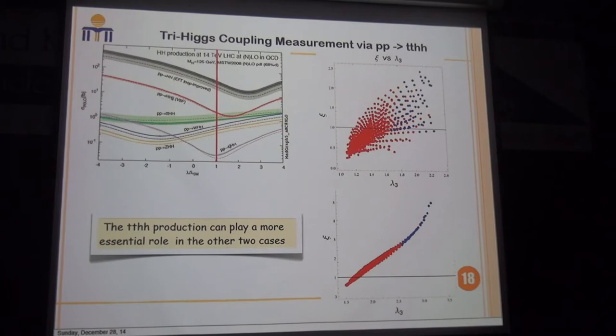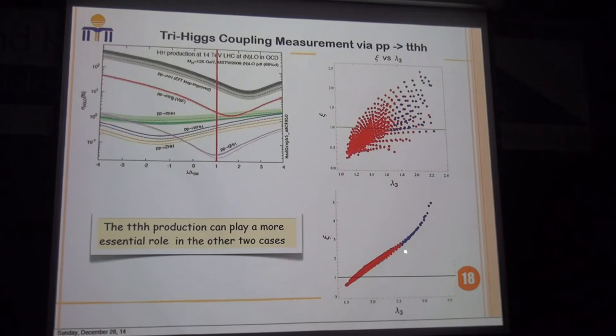As for the other two cases — where the bump for the Higgs potential is generated by an additional charged scalar at the quantum level, or by introducing higher-dimensional operators — in these two cases the distribution of the tri-Higgs coupling is more convergent and a larger tri-Higgs coupling value is favored. So we can easily conclude that the ttHH production plays a more essential role in these two cases.